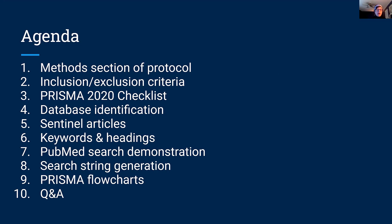We're going to look at the methods section of the protocol again, just familiarize ourselves with that. We're talking about inclusion and exclusion criteria. We'll look at the PRISMA 2020 checklist, database identification, sentinel articles, keywords and headings. I'll do a PubMed search demonstration, and then talk a little bit about search string generation and PRISMA flowcharts. This is probably all going to be Greek to you at this point, but we'll get into it and you'll see what it's all about.